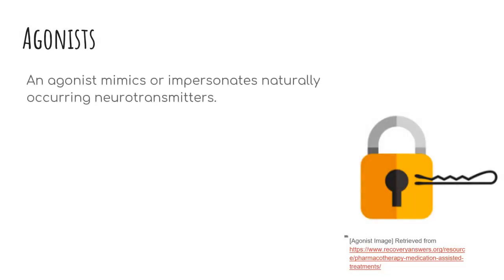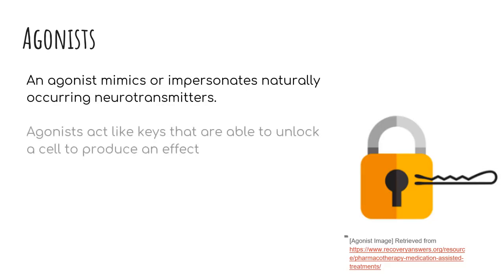One of the major classifications of drugs in pharmacology are agonists. An agonist is a drug which binds to the synaptic receptor and increases postsynaptic responses. An agonist mimics or impersonates naturally occurring neurotransmitters. An agonist acts like keys that are able to unlock a cell to produce an effect.